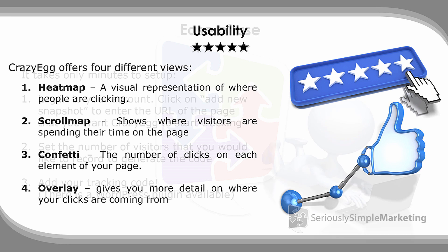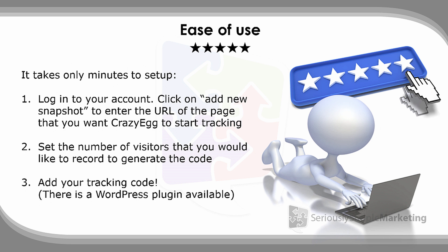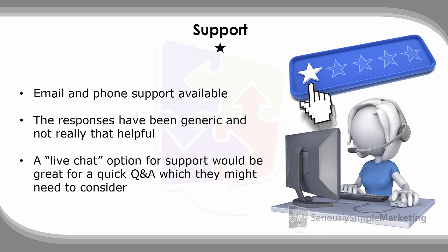Ease of use — again, five out of five stars. It is so simple to use Crazy Egg. All you need to do is log in, put in the URL you want tracked, and place a small snippet of code on your site. You can also use their WordPress plugin, which does it automatically for you, making it very easy to use.